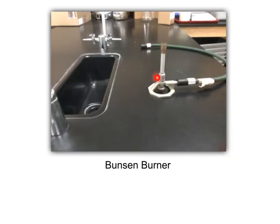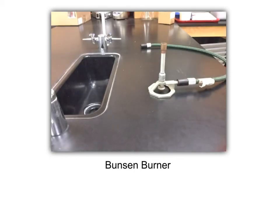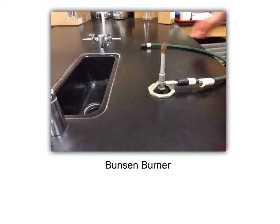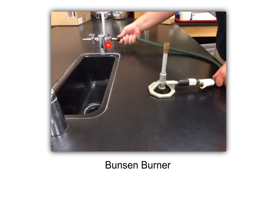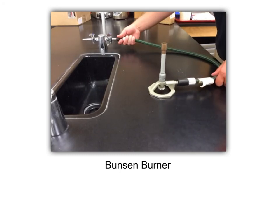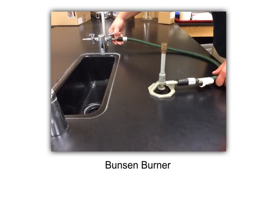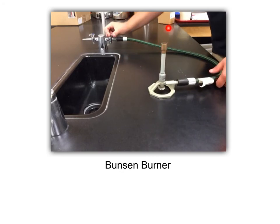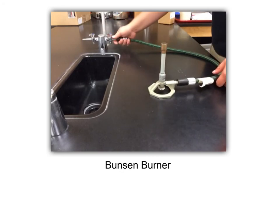This is a Bunsen burner. Its function is to provide us with a controlled flame — the important piece is that it's controlled. You plug it into the gas, turn the gas on, and use the igniter to ignite it, giving you a very stable, controlled flame.